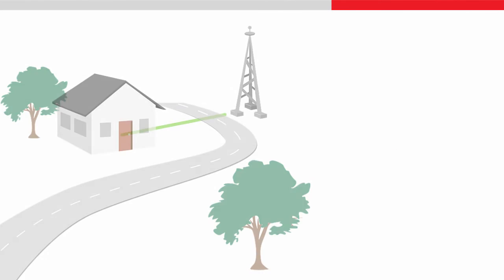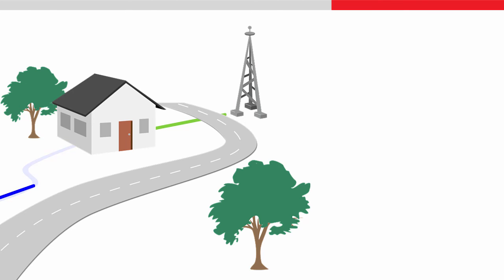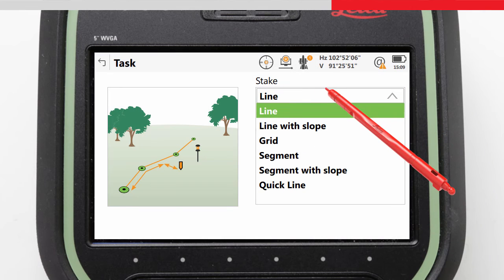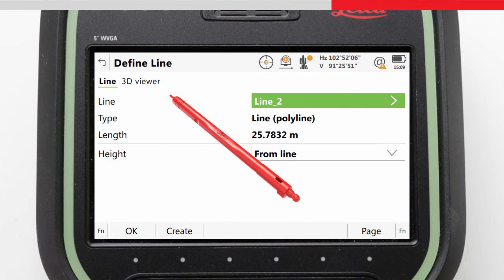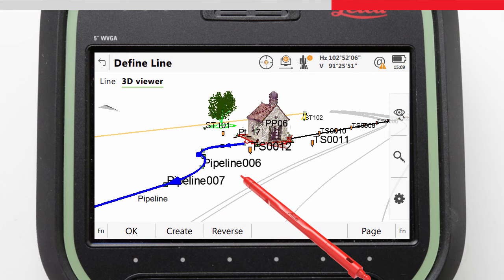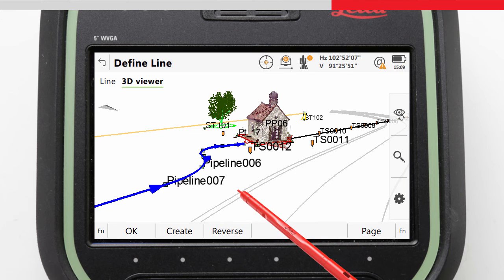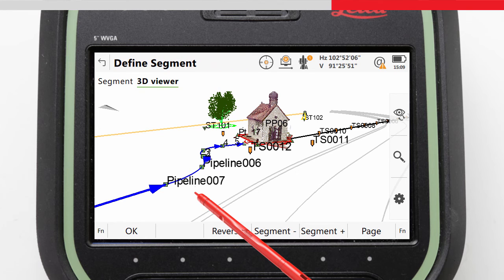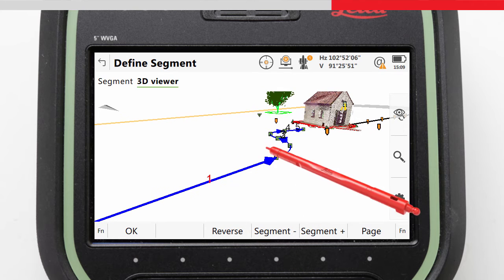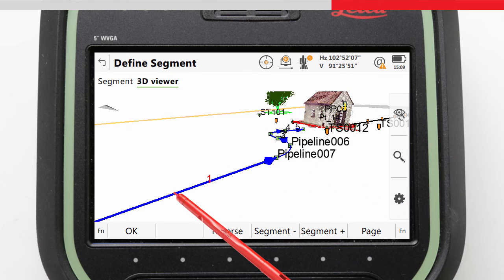The final task in this video is to stake out part of the pipeline. For this task, we don't want to stake out the whole pipeline, but we are interested in one segment of it, to check that an extension in the future will avoid the building. Starting in the Task screen, we choose Segment and press OK. We choose the line containing the segment in the 3D viewer, but realize the line direction is wrong, so we press Reverse to reverse the line and press OK. We then choose which segment of the line we want to work with, so Leica Captivate ignores all other segments during staking. We tap on the segment in the 3D viewer and press OK.